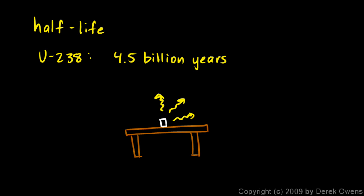If it takes 4.5 billion years for half of it to decay, then it must be decaying very, very slowly. But remember, there are a lot of atoms in a lump of uranium. And in any given second, a lot of them are decaying and emitting radiation.